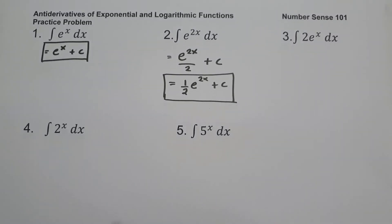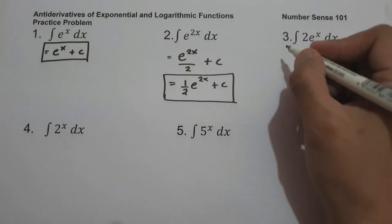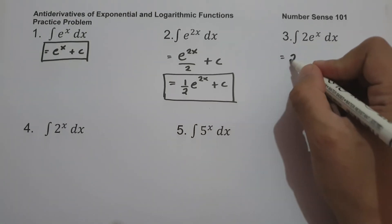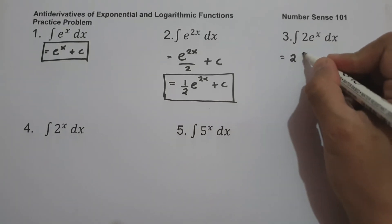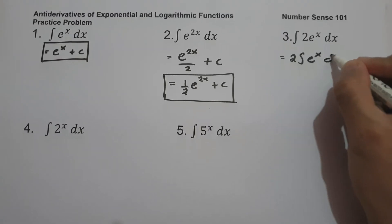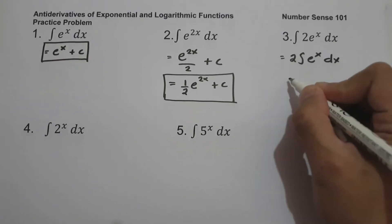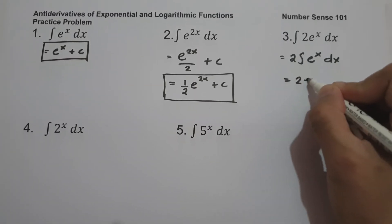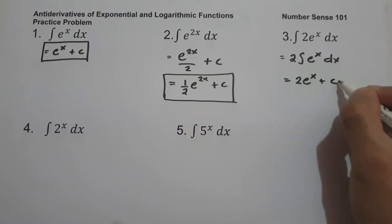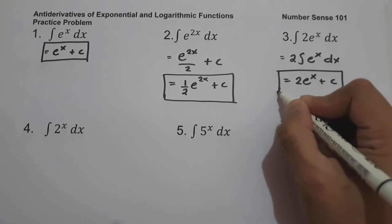On number three, what is the antiderivative of 2e^x dx? The constant 2 is moved in front, giving 2 times the antiderivative of e^x dx, which equals 2e^x + c. That is our answer.